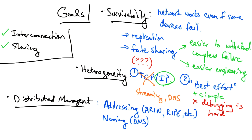DNS allows each independent organization to manage its own names, and BGP allows each independently operated network to configure its own routing policy. This means that no single entity needs to be in charge, and thus allows for organic growth and stable management.